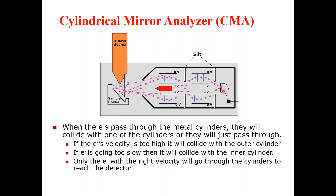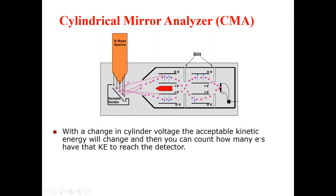Only those electrons with the right velocity will be analyzed for the composition of the particular sample we are interested in analyzing with XPS. With the change in the cylinder voltage, the acceptable kinetic energy will change, and you can count how many electrons have the kinetic energy to reach the detector — which depends on the change in kinetic energy of the cylinder.